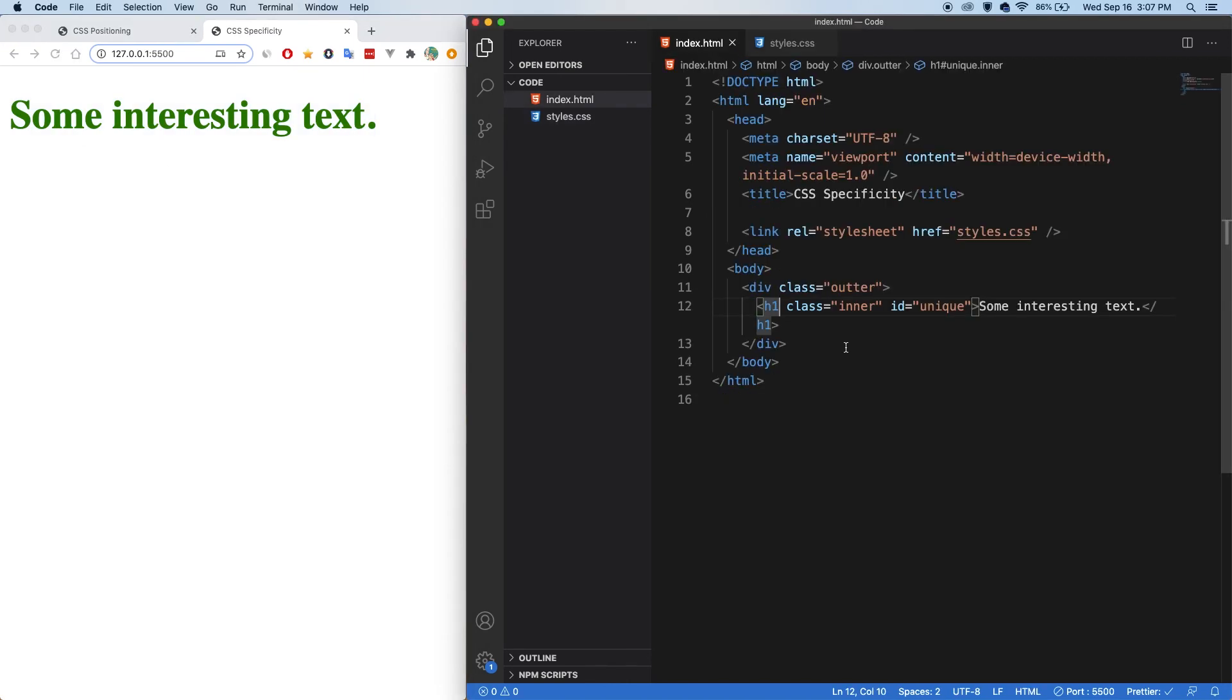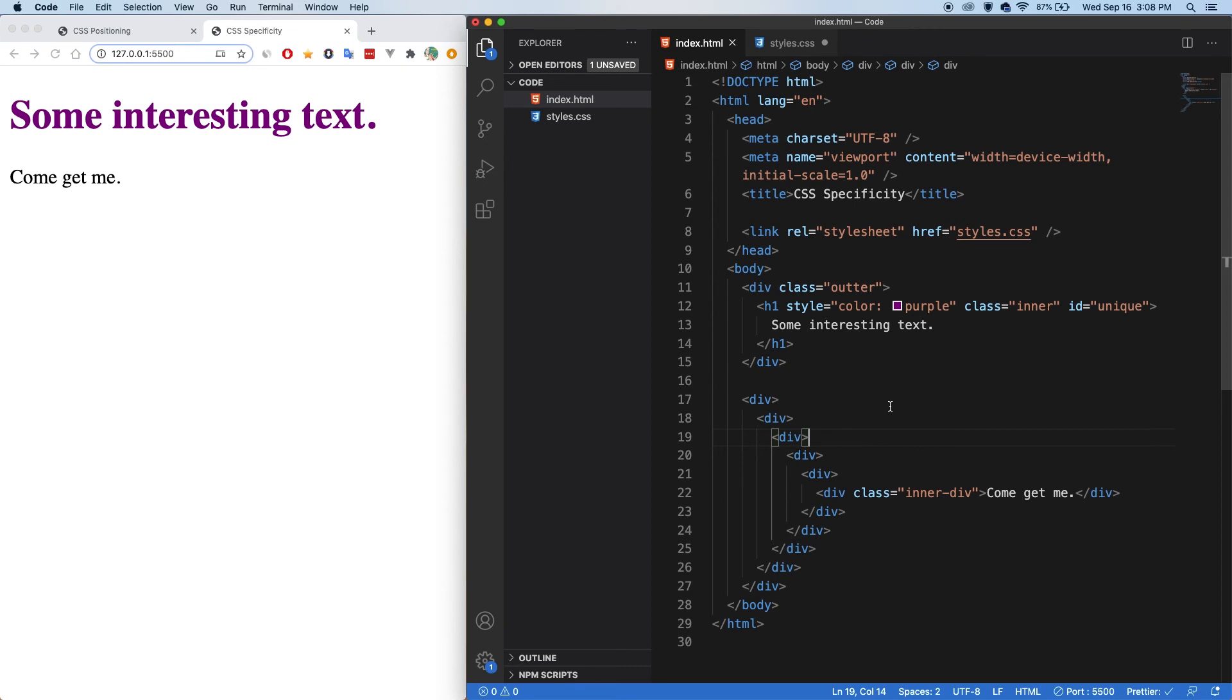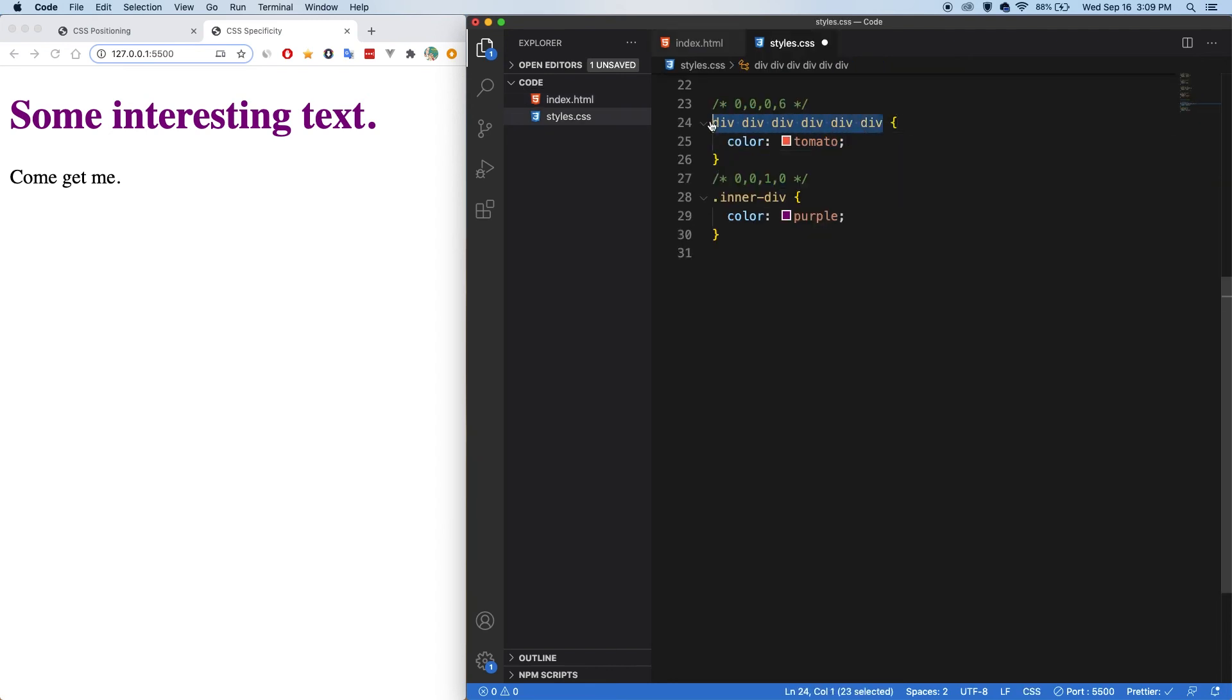And finally, if we add inline style, like color is purple, and I save now, it's going to beat everything else and be applied. And just to quickly show you that example before, where one class is going to win against a whole bunch of nested divs being selected. So we have a selector for the six different divs, and then we're just selecting the class. And if we save, we can see it gets purple as well. And that's because of how it's weighted.